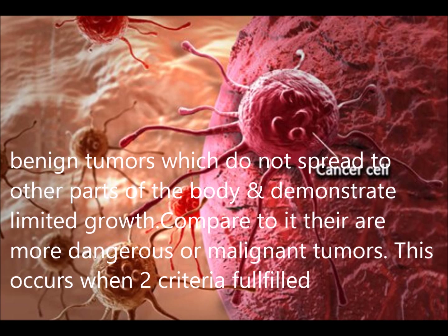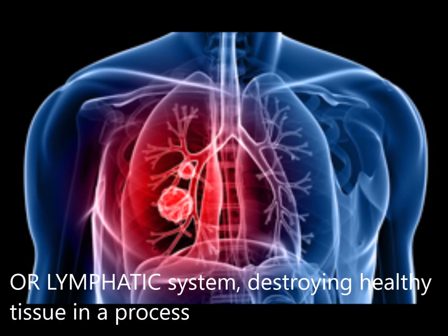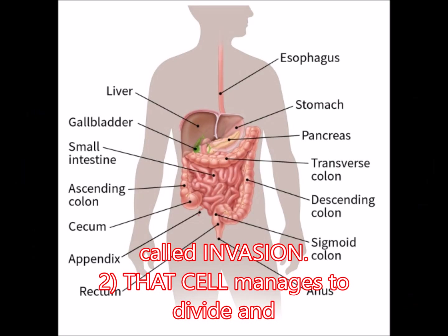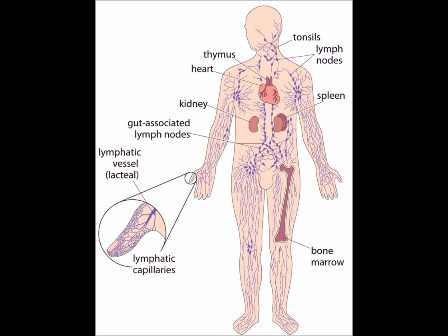Compared to benign tumors, there are many dangerous or malignant tumors, and these occur when two criteria are fulfilled. A cancerous cell manages to move throughout the body using the blood or lymphatic system, destroying healthy tissue in a process called invasion. The cell also manages to divide and grow, making new blood vessels to feed itself in a process called angiogenesis. There are said to be over 200 different types of cancer.